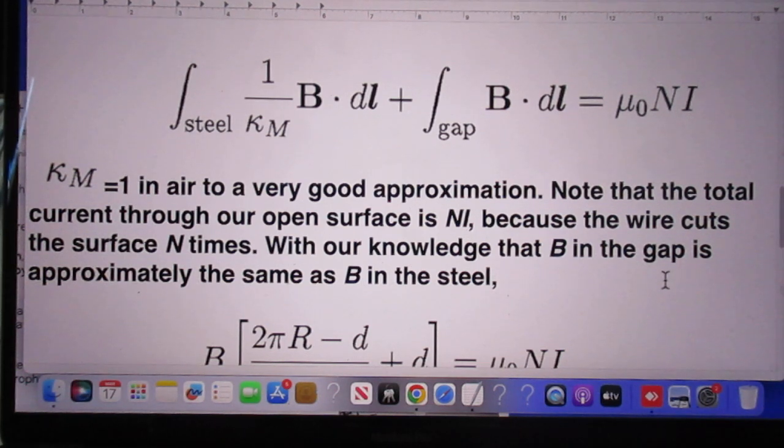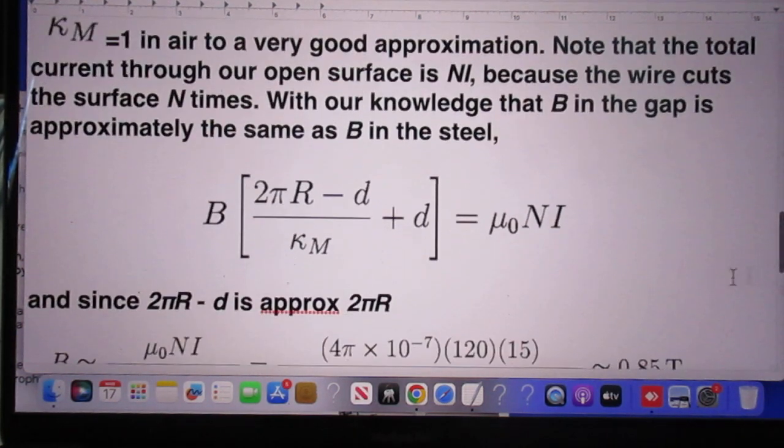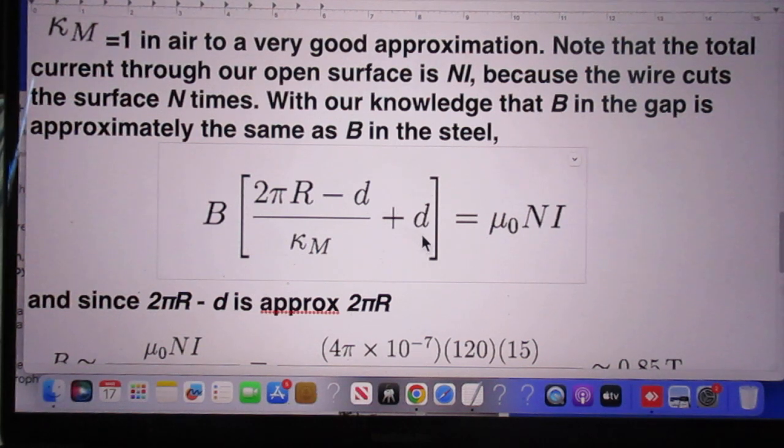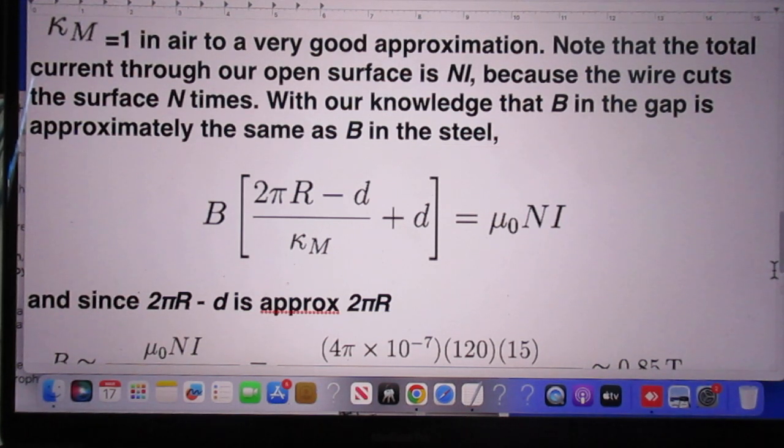Now with our knowledge that B in the gap is approximately the same as B in steel, this B is the same as this B. So now we have two parts, we have the steel part and we have the air part. So that B is the same in both and so this is the steel part that is the 44 cm minus the 2.5 mm and they have a kappa M of 2500. This is the part through the gap for which kappa M is 1. So it is a rewriting of Ampere's law.